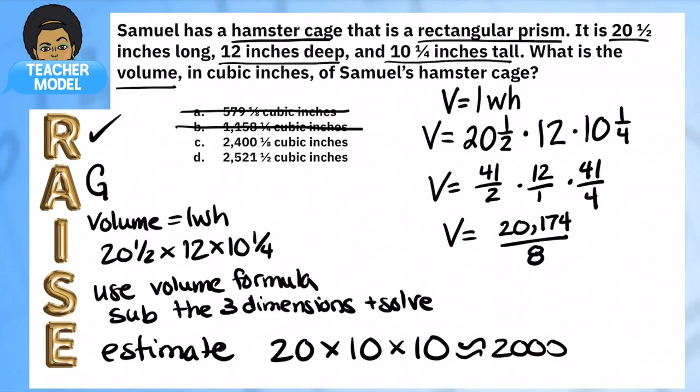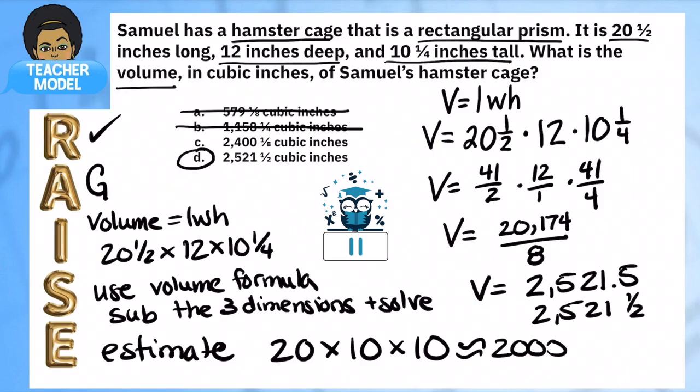We're going to simplify that more. You're going to divide by 8. When you do that, your calculator is going to tell you 2,521.5. That's the same as, if you were to put that into a fraction, 2,521 and a half. That absolutely matches our answer D.